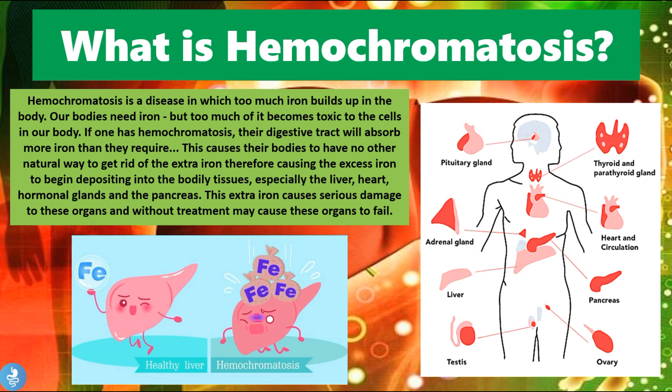Hemochromatosis is a disease in which too much iron builds up in the body. Our bodies need iron, but too much of it becomes toxic to the cells. If one has hemochromatosis, the digestive tract will absorb more iron than required. The body then has no natural way to get rid of the extra iron, causing excess iron to begin depositing into bodily tissues — especially in the liver, the heart, the hormonal glands, and the pancreas.